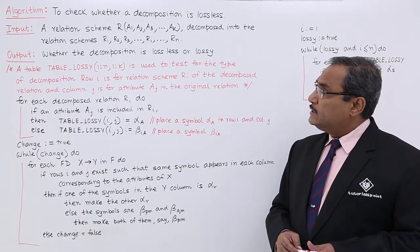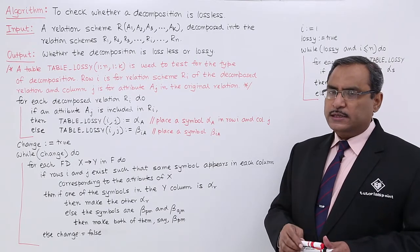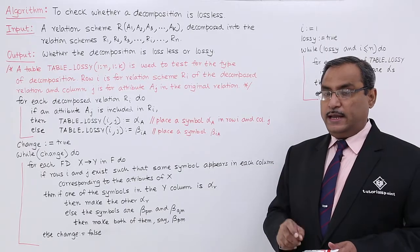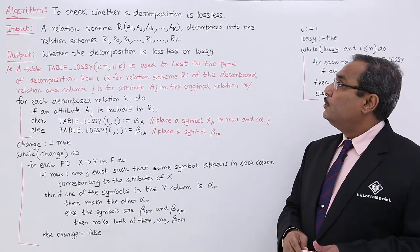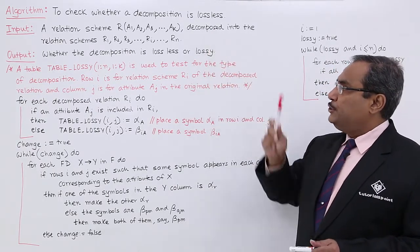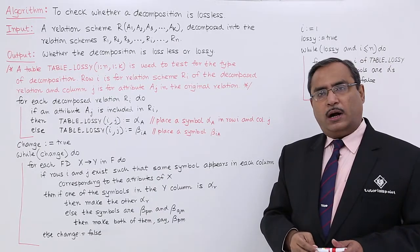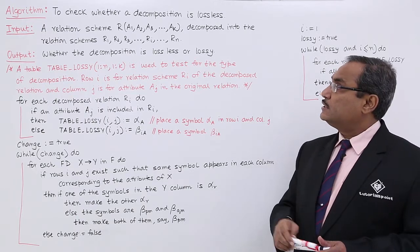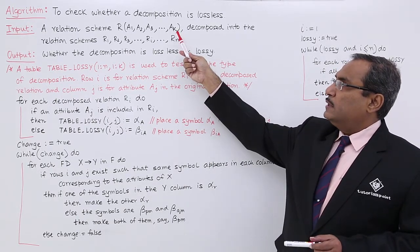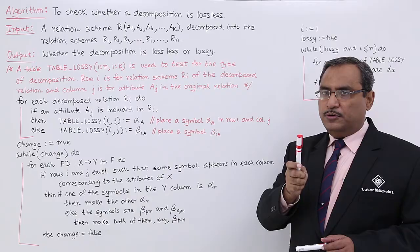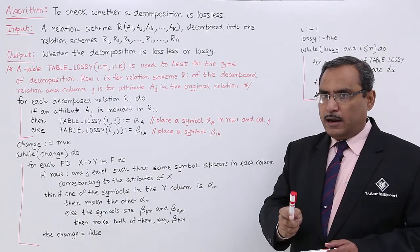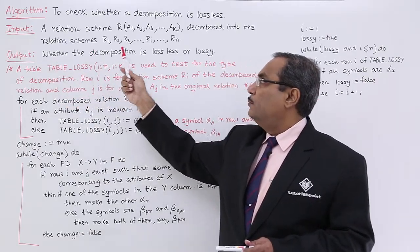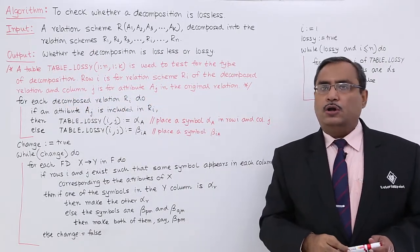The input is a relation scheme R containing attributes A1, A2, A3, ..., Ak, which has been decomposed into relation schemes R1, R2, R3, ..., Rn. We are having K number of attributes and N number of decomposed relations. The output will be whether the decomposition is lossless or lossy.